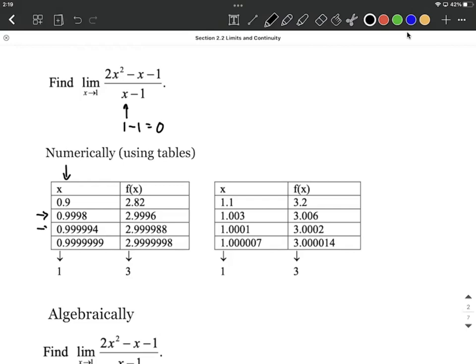As we pick subsequent values of x closer and closer to 1 and plug them in from just below 1, we're going to get values of y, our output values of f of x, that look like they're getting closer and closer to 3.